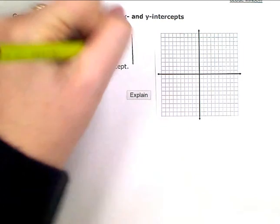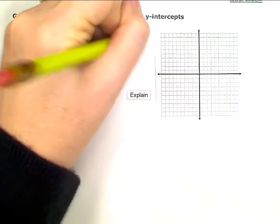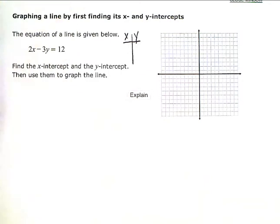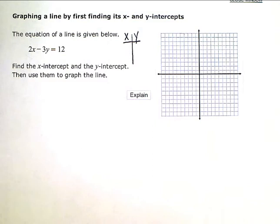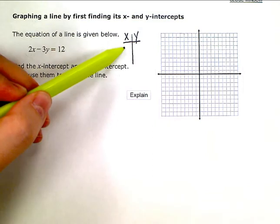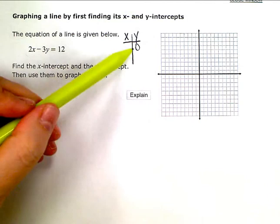Your intercepts are always indicated by the fact that one of your coordinates is zero, and it's always the opposite variable. For the x-intercept, the zero will be the y-value.